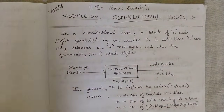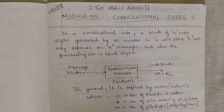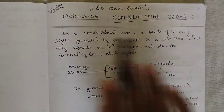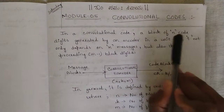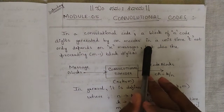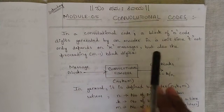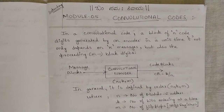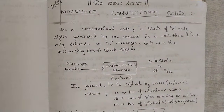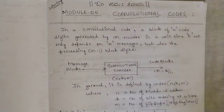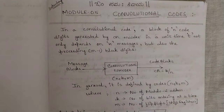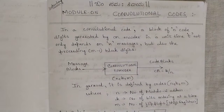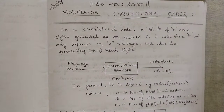In this video I am going to be discussing some basic parts which you need to know for convolutional codes. Basically, what do you mean by a convolutional code? In a basic block of a convolutional code, a block of n code digits generated by an encoder in unit time t not only depends on k messages but also on the preceding m minus 1 block digits. The encoding and decoding depend on previous values and next state values using shifting, making it dependent on messages and block digits.